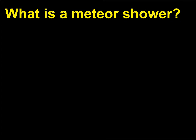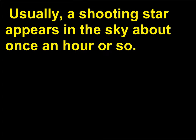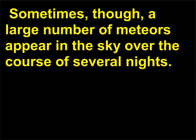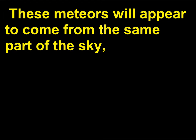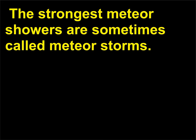What is a meteor shower? Meteors are often called shooting stars. Usually a shooting star appears in the sky about once an hour or so. Sometimes, though, a large number of meteors appear in the sky over the course of several nights, appearing to come from the same part of the sky, with dozens, hundreds, or sometimes thousands visible every hour. We call such dazzling displays meteor showers. The strongest meteor showers are sometimes called meteor storms.